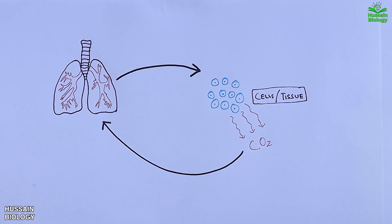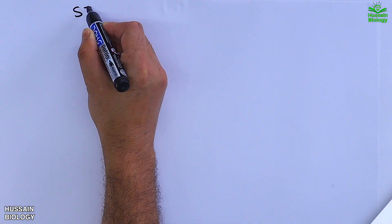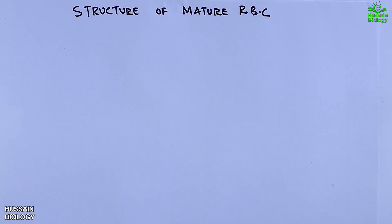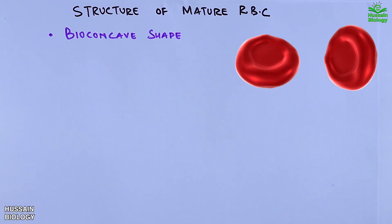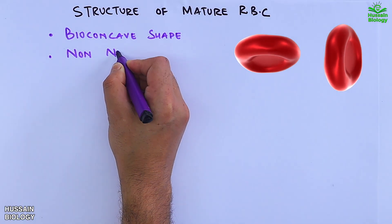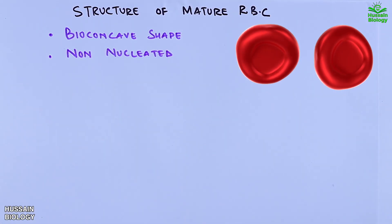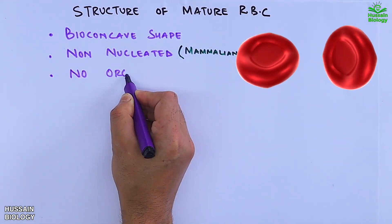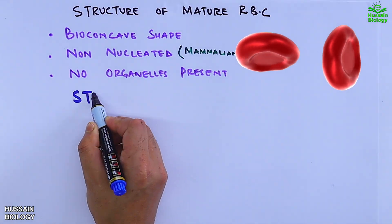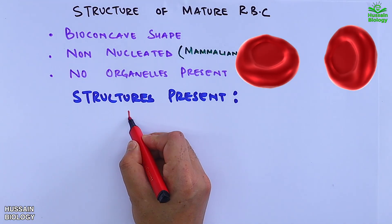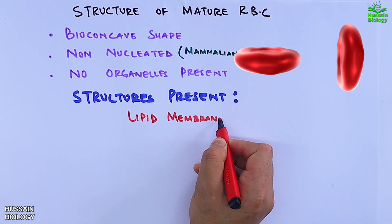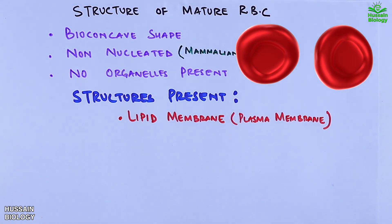RBCs deliver CO2 to the lungs for expiration. Now let's get to the structure of the RBC. The RBC has a biconcave shape as shown in the animation. It is non-nucleated in the case of mammals, and there are no organelles present in erythrocytes.